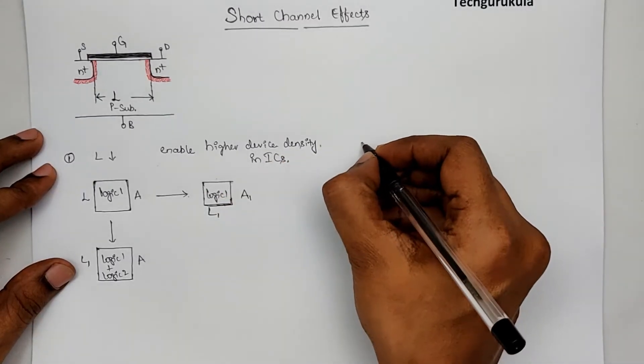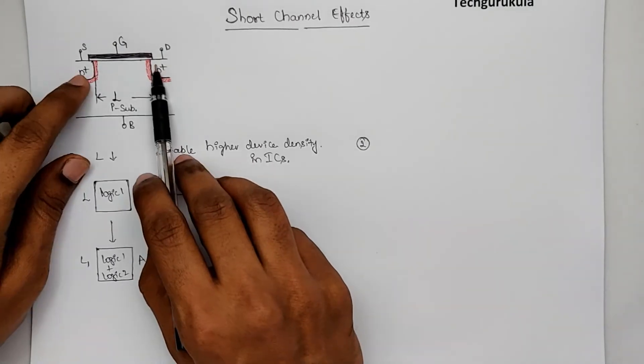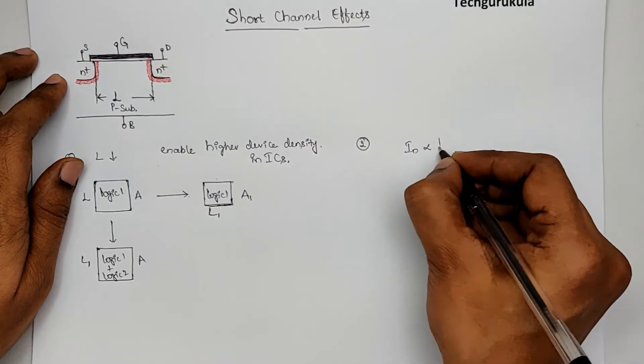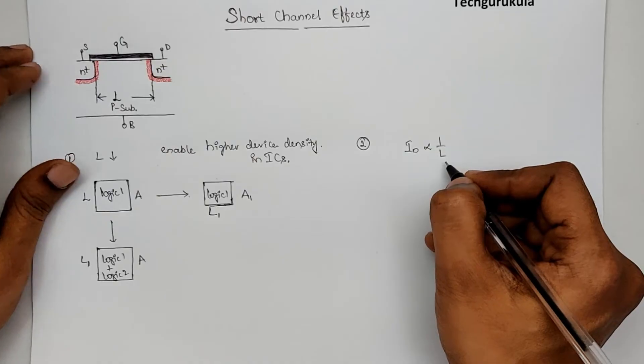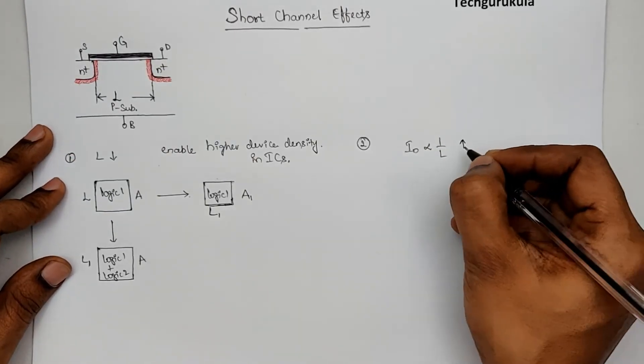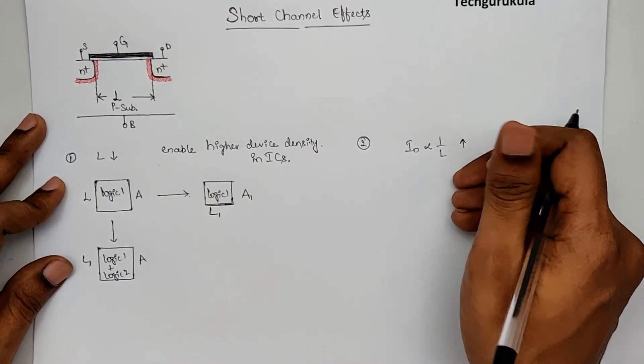And now, coming to the second point of why, when the channel length reduces, we know that the drain current that flows is inversely proportional to the channel length, which means directly proportional to 1 over L. So, when channel length reduces, the drain current would increase for a given potential.